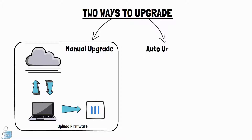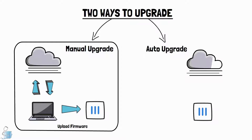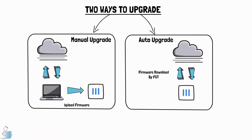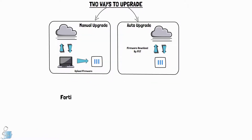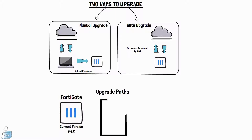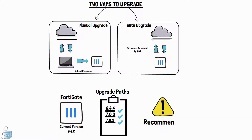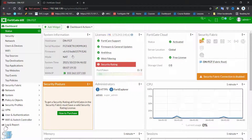The other way is the automatic way, in which your FortiGate device can actually talk to the cloud, download the image you specify, and install it. Regardless of which mode you choose, you have to keep in view the upgrade paths for the FortiGate device, because Fortinet recommends that you upgrade your device according to the upgrade path so that there is no data loss on your FortiGate device.